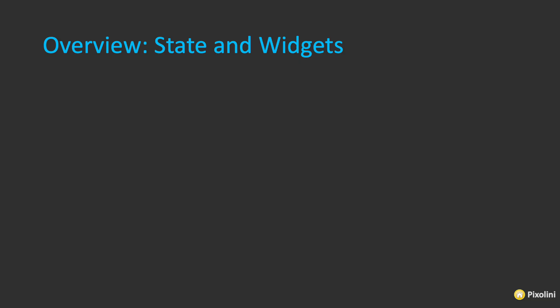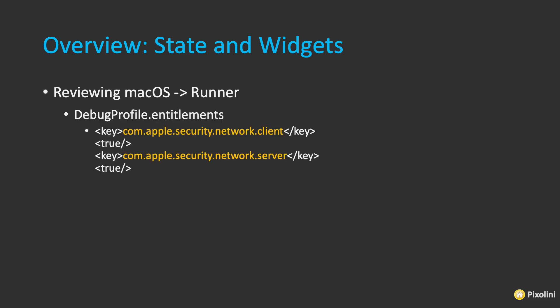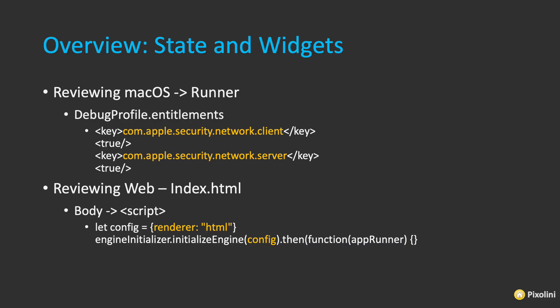Let's get an overview of the state and widgets. We're going to review the macOS runner project, look at the debug profile entitlements file, and make sure the two keys are added for the security network client and server — that way it allows us to make HTTP calls over the internet to retrieve images. We're going to do the same for the web project, look at the index.html file, and set a configuration of render equals HTML for the Flutter rendering engine.